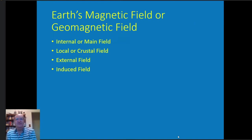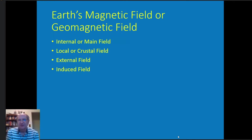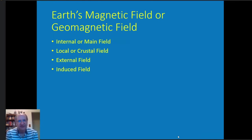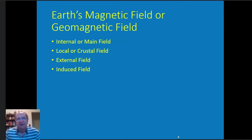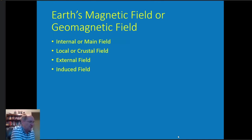The magnetic field of the Earth has four parts: the internal or main field, the local or crustal field, the external field, and the induced field. All of these play a part in what you see if you have a compass or a magnetometer on the surface of the Earth.